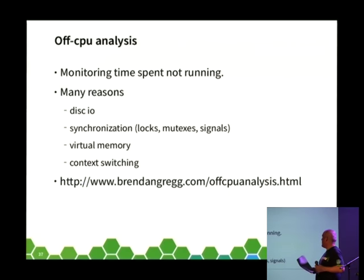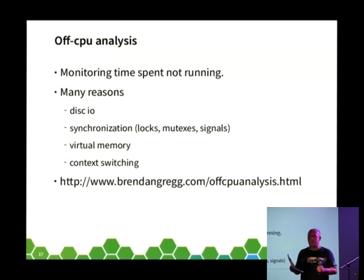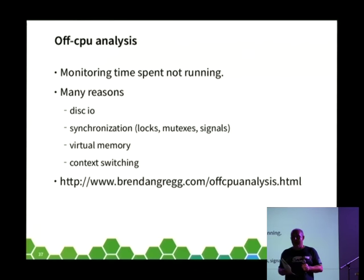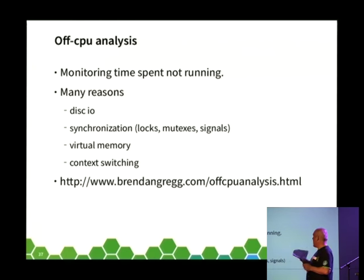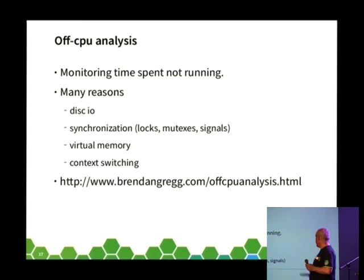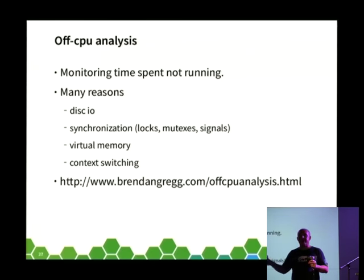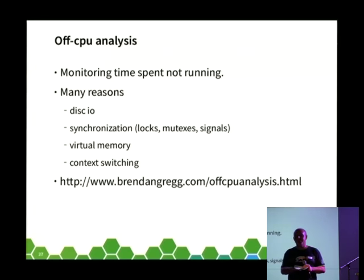It's worth talking about off-CPU analysis. Everything discussed so far monitors what's happening while you're running on the CPU. But sometimes it's just as important to find out why your code is not running. Your code won't be running because of disk IO, task-to-task synchronization, virtual memory subsystem effects, or involuntary context switching. Brendan Gregg has written a paper showing how to use perf trace plus perf inject to monitor the scheduling system calls and produce flame graphs showing how much time your code is off the CPU.